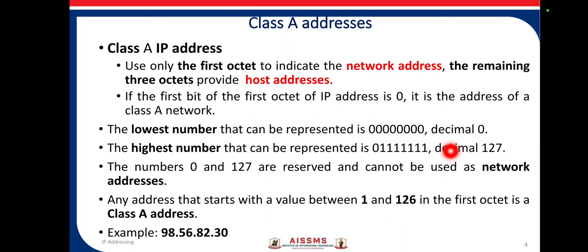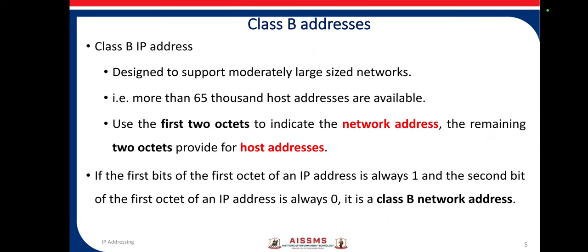Zero and 127 are reserved, so they cannot be used as a network address. We can use IP address values between 1 and 126. An example class A address is 98.56.30.something.